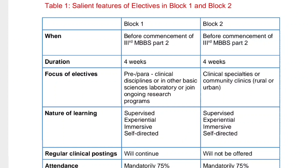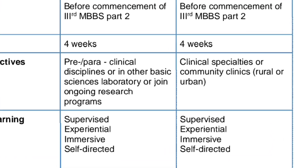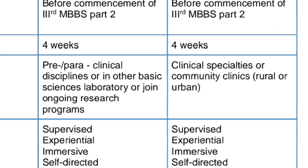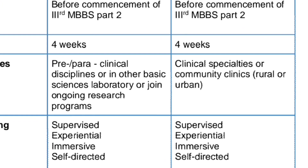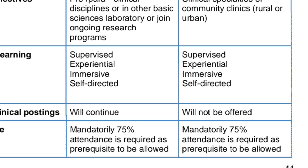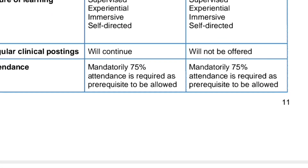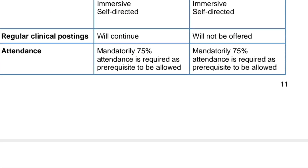You will do your electives before the commencement of Phase 3 MBBS Part 2 — that is, before your final year. It will be of two months total, structured as 15 days plus 15 days, or 30 days plus 30 days. In Block 1, it is preclinical, paraclinical, and other basic sciences. In Block 2, it will be clinical. Teaching will be supervised, experimental, immersive, or self-directed.